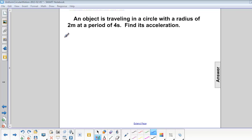An object is traveling in a circle with a radius of 2 meters at a period of 4 seconds. Find its acceleration.